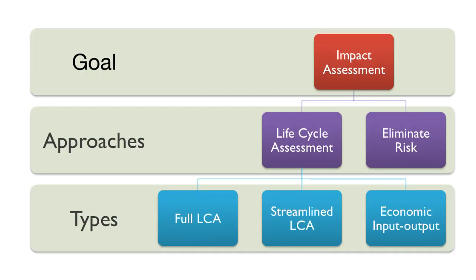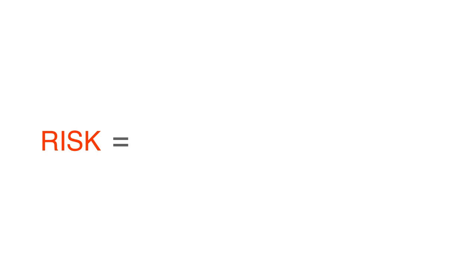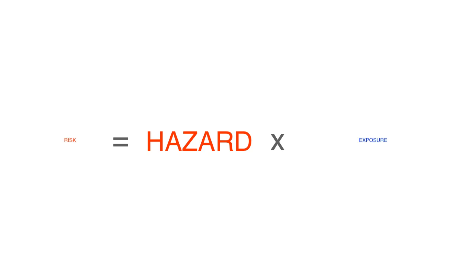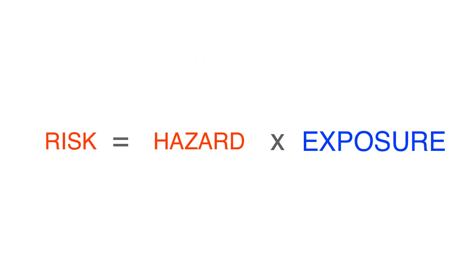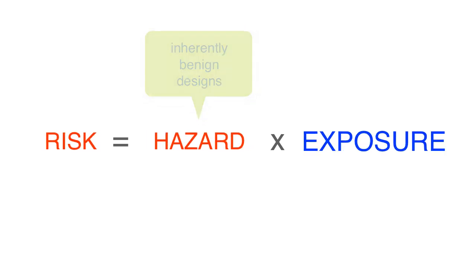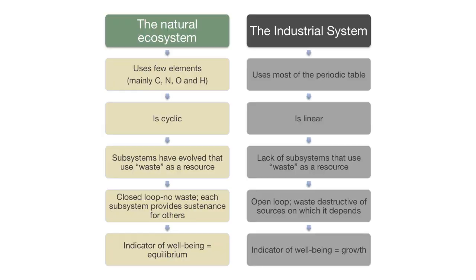Another approach to reducing the impact of a design is to eliminate risk. Risk is defined as the product of hazard and exposure. In a strategy of eliminating risk, either the exposure is eliminated or the hazard is eliminated through an inherently benign design. To consider how a design could be benign, we look to nature, as natural systems are inherently benign.